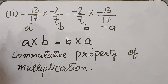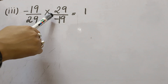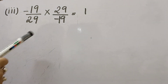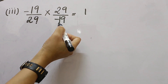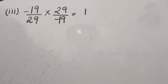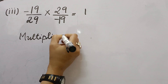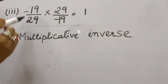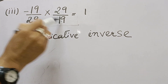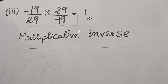Now for Part 3: (-19/29) × (29/(-19)) = 1. Here, (-19/29) is multiplied by its reciprocal (29/(-19)), and the result is 1. When a number multiplied by the reciprocal of the same number gives 1, this is called the multiplicative inverse property.